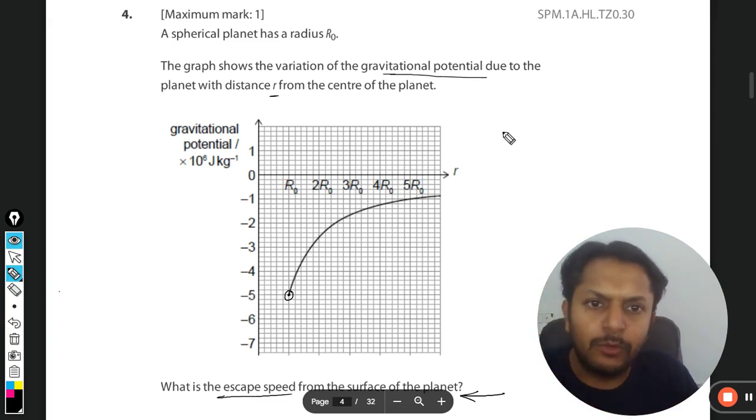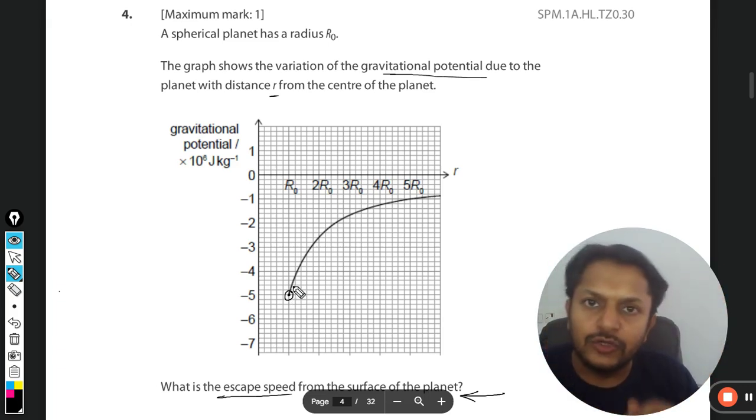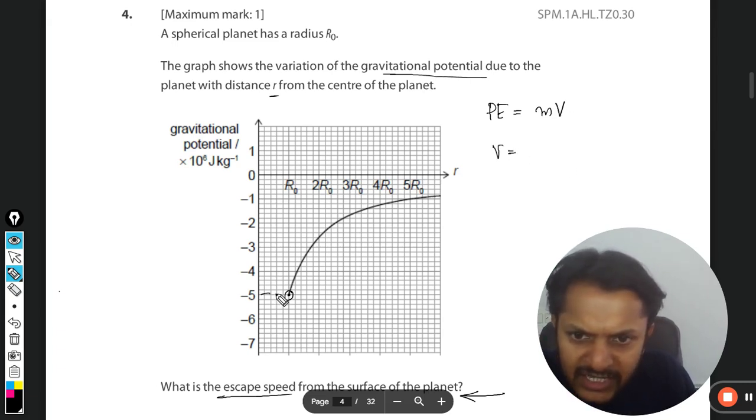Doing it step by step, just a moment. Kinetic energy at this point is zero because the rocket is now sitting on the planet. So with respect to planet there is no kinetic energy at all, but the potential energy will be given by the mass into the potential at the point. Potential here we can read it, it will be minus 5 × 10^6 joule per kg.